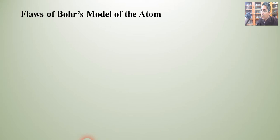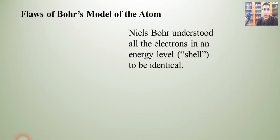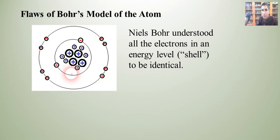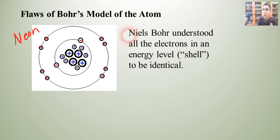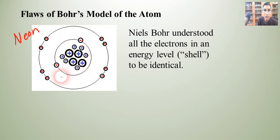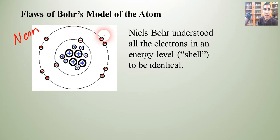The reason we're talking about this is that there are some major flaws in the Bohr model of the atom. You might recall that we looked at a picture of the neon atom in the last video. Niels Bohr understood all the electrons in an energy level, or electron shell, to be identical to each other. He imagined two electrons orbiting in a circular orbit in the first energy level, and eight electrons in the outermost energy level of neon — all identical, all orbiting in a circular or spherical orbit.